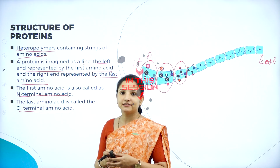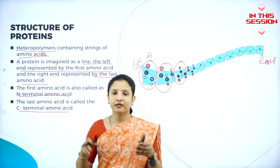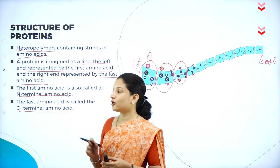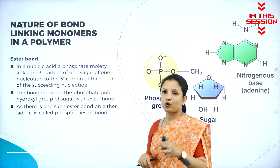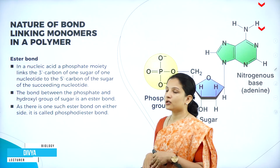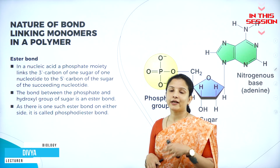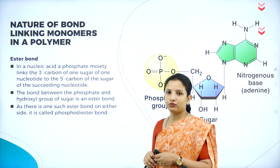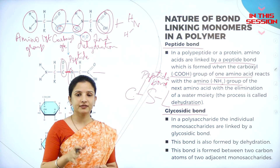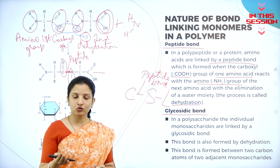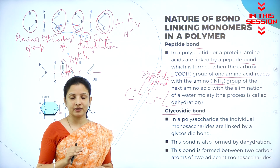The first amino acid is called the N-terminal amino acid and the last amino acid that makes up the protein is called the C-terminal amino acid. Ester bonds are usually seen in nucleotides, either deoxyribonucleotides or ribonucleotides. Glycosidic bonds usually occur in polysaccharides. There are two types of polysaccharides: simple polysaccharides and complex polysaccharides.